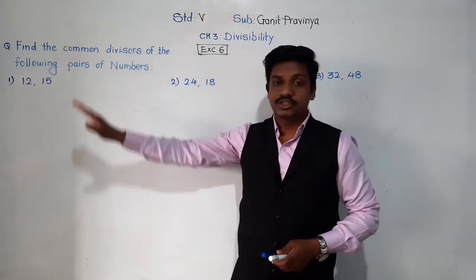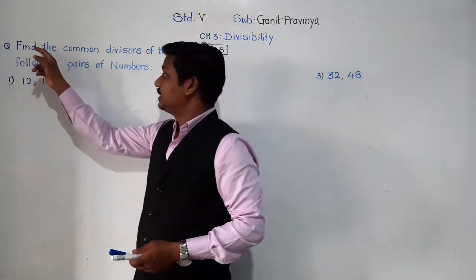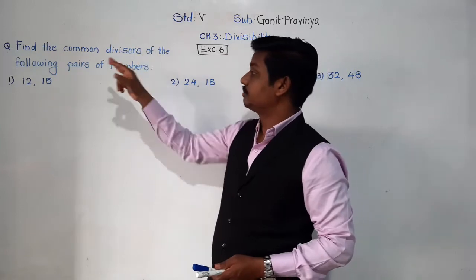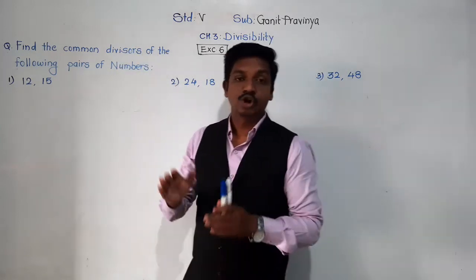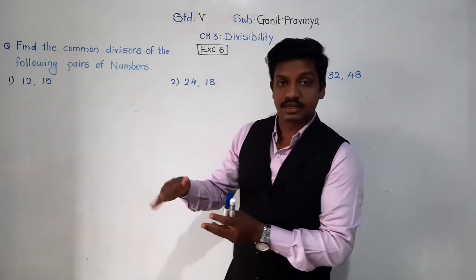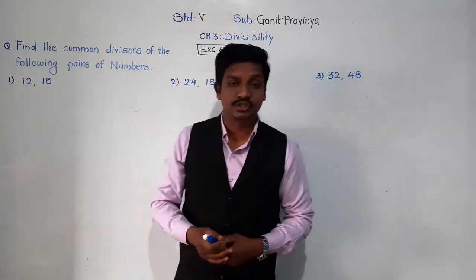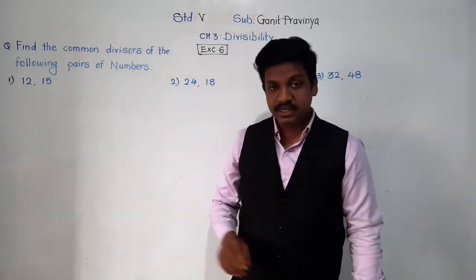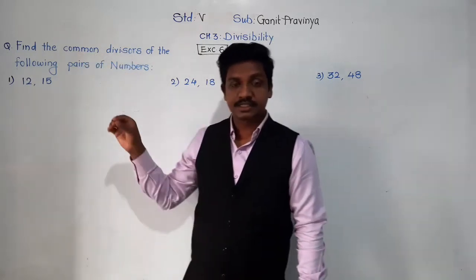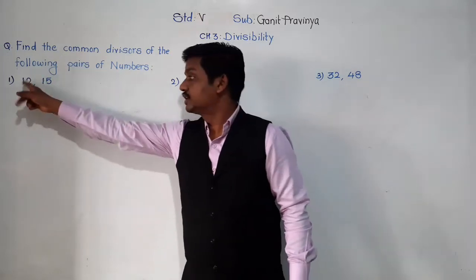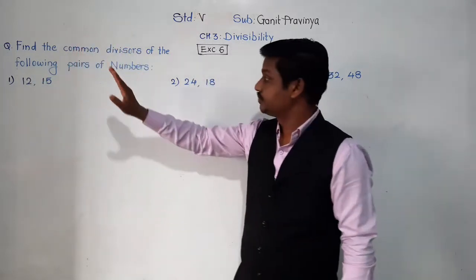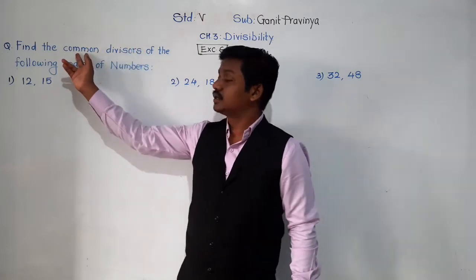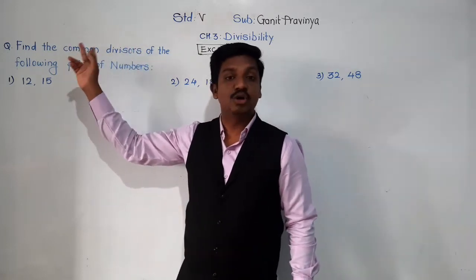So the first question is: find the common divisors of the following pairs of numbers. Common divisors — this is the next concept. Divisors we know — divisors means factors, factors means the numbers by which the given number is divisible. So here there is one word added, that is 'common'.